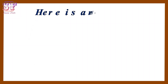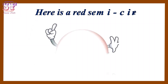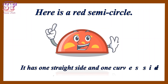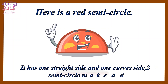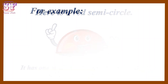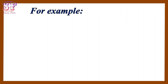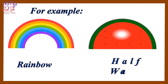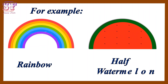Here is a red semi-circle. It has one straight side and one curved side. Two semi-circles make a circle. For example, rainbow and half watermelon.